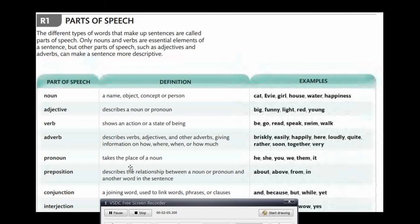Pronouns take the place of a noun. For example, he, she, you, we, them, and it. Prepositions describe the relationship between a noun and another word in the sentence. For example, the words like about, above, from.